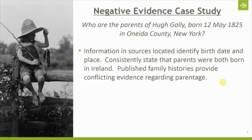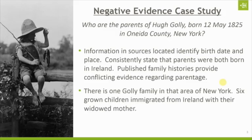All of those published family histories provided direct information regarding his parentage, which was our research question, but they conflicted. I would give a word of caution that even if every single published family history listed the same parents, we would still need to prove that. We would still be looking for additional evidence in our reasonably exhaustive search. But in this case, the conflicting information gave us an immediate red flag that we needed to gather additional evidence.